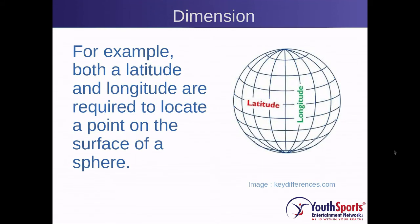Here is an example of a sphere. When we consider a globe, we usually have latitude and longitude. These are the two coordinates required to specify a point on the sphere.